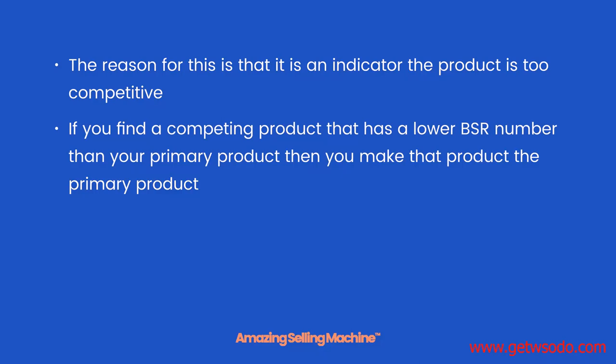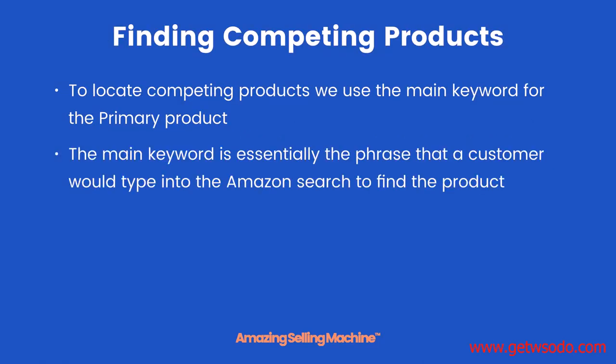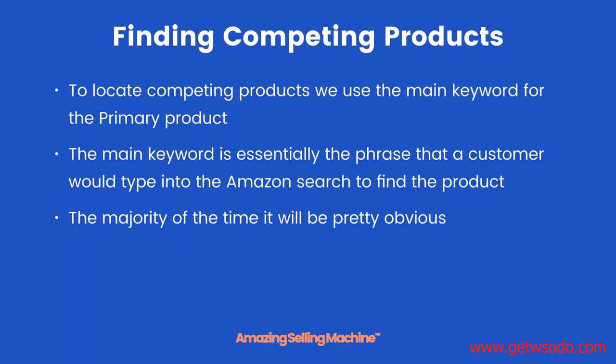If you find a competing product that has a lower BSR number than your primary product but is still inside the BSR range, then you make that product the primary product. Essentially we're looking for three products. To locate competing products, we use the main keyword for the primary product — the phrase that a customer would type into the Amazon search to find the product.